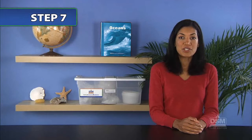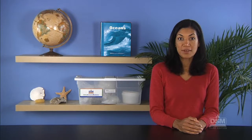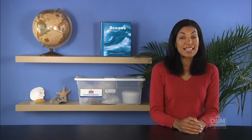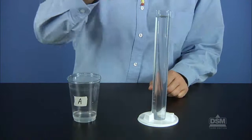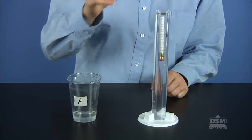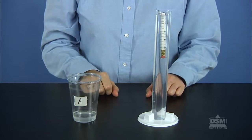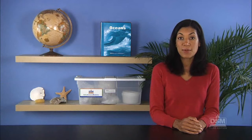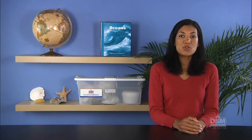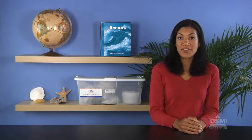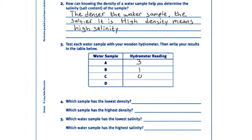Bring students' attention to the four distribution stations and instruct one student from each team to get a cup of water sample. To test their samples, have students pour the water into their tubes, insert the hydrometer, and record the reading on their activity sheets. Next, tell students to pour the water sample back into the cup and return it to the station. Instruct students to collect a sample at the next station and repeat this procedure until each team has tested all four samples.